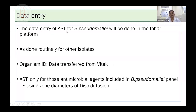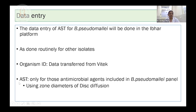Data entry for Burkholderia pseudomallei for all recommended drugs must be done in the IBAR platform. Go to disk diffusion as the secondary test and enter the interpretation data. It has to be done routinely for all isolates like how you do for all other clinical isolates. One important point: include all clinical Burkholderia pseudomallei isolates from all clinical samples. Organism ID done via Vitek will be transferred automatically; if manually identified, enter ID manually. Enter only the AST report for the antimicrobial agents included in the panel.